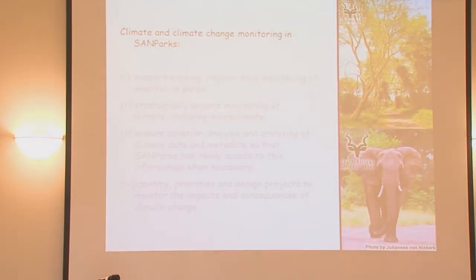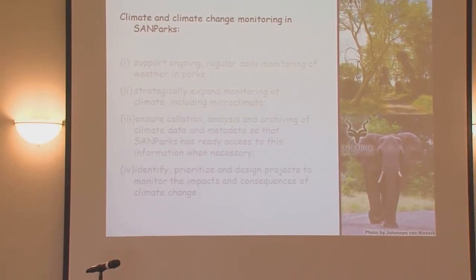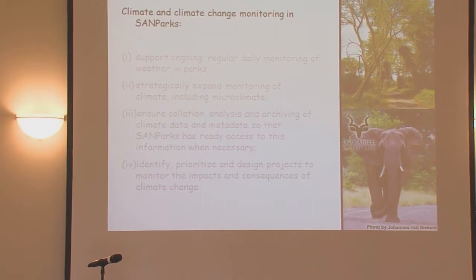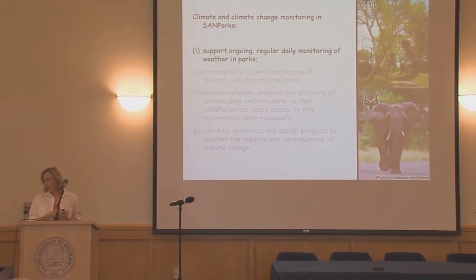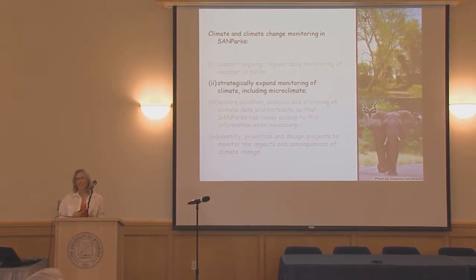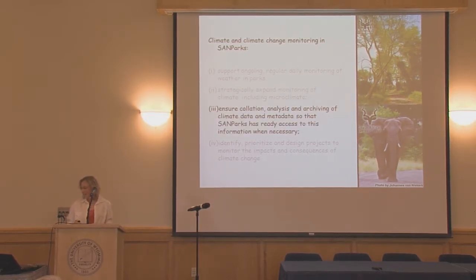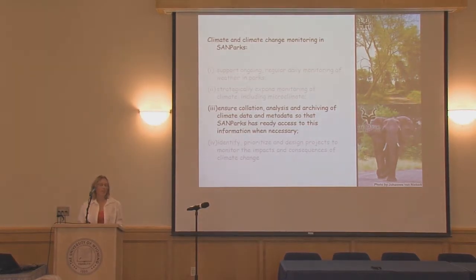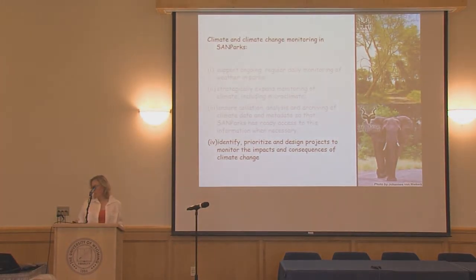As a big organisation we have developed a biodiversity monitoring framework consisting of different programmes, and I'm going to focus on the one for global climate change. We have four main aims: first, to support ongoing regular daily monitoring of weather in our national parks; second, to strategically expand monitoring of climate including microclimate where necessary; third, to ensure the collation, analysis, and archiving of climate metadata; and fourth, to identify, prioritise, and design projects to monitor the impacts and consequences of climate change.